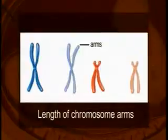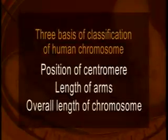In humans we have metacentric, submetacentric, and acrocentric types of chromosomes. One more basis of classification was the lengths of the arms, that is the sister chromatids. If the chromosome is metacentric, the length of the arms is equal. If it is submetacentric, acrocentric, or telocentric, the length of the arms is not equal. The third basis of classification of human chromosomes is the overall length of the chromosome.